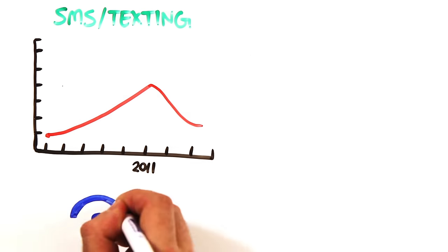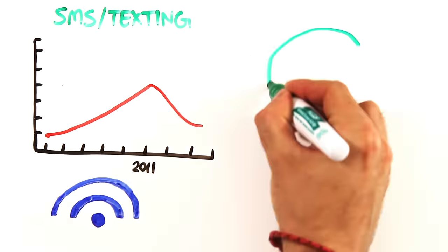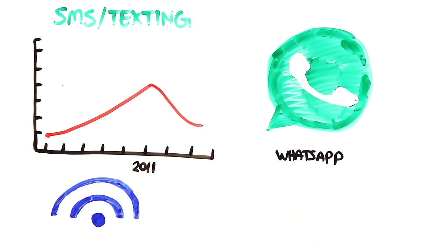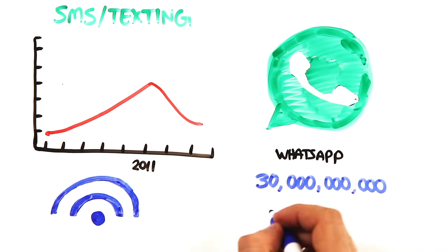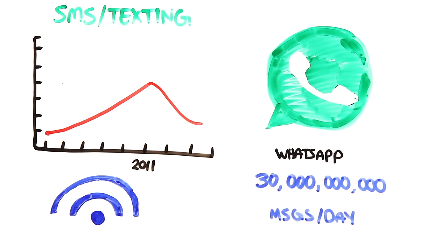Now, most people send messages via internet services. In fact, last year, WhatsApp overtook traditional SMS as the number one handler of text messaging, managing 30 billion messages sent every day all around the world.